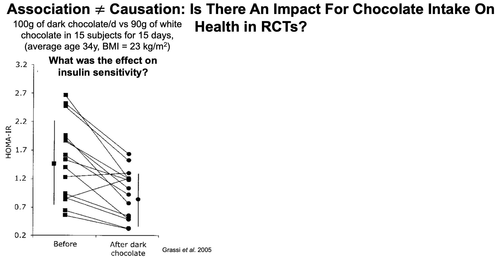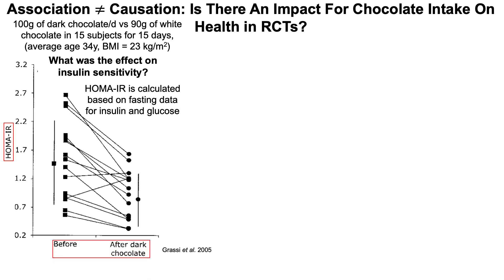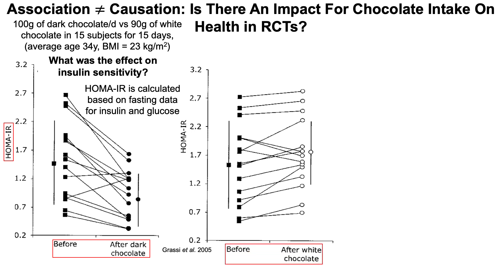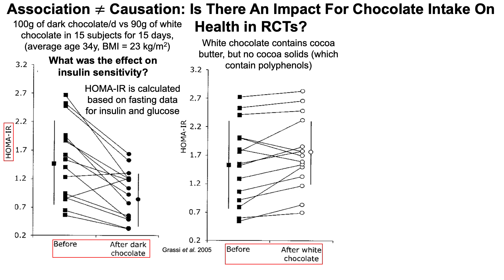First, what was the effect on insulin sensitivity? They looked at HOMA-IR — the Homeostasis Model Assessment of Insulin Resistance — calculated based on fasting insulin and glucose. They compared HOMA-IR values before and after 15 days of dark chocolate consumption, and similarly before and after white chocolate consumption. White chocolate differs from other chocolates in that it contains cocoa butter but no cocoa solids, which contain most of the polyphenols. In terms of insulin sensitivity, a lower HOMA-IR indicates more insulin sensitivity. The dark chocolate group had a reduction in HOMA-IR — an improvement in insulin sensitivity — whereas the white chocolate group had no such reduction.